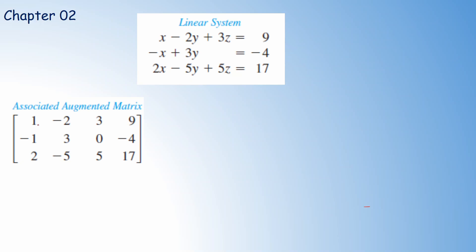Below the leading 1 we need to have 0. To make the entry in the second row into 0, we can add 1 to minus 1 — that means multiplying the first row by 1 and adding it into the second row to get a new second row. To make the entry in the third row into 0, we multiply the first row by minus 2 and add it into the third row. So minus 2 times R1 plus R3 gives us a new R3.